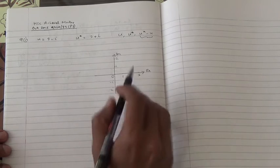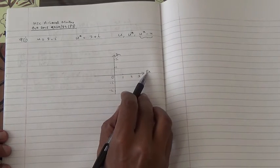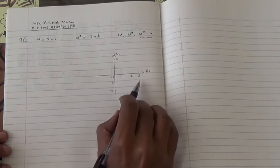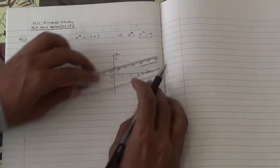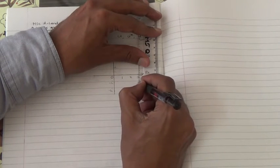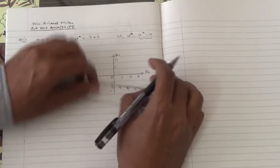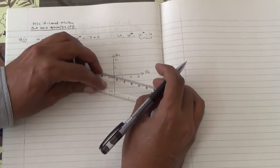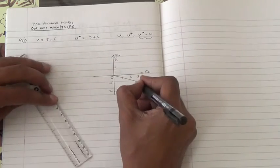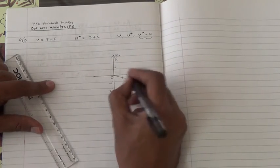So three is going to be here on the real axis, and the minus i is down here. So we have a point here. Maybe we can probably try and make it as accurate as possible. So here's the point. So this is the first representation, and that's u.